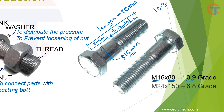Similarly, if the bolt diameter is 24 mm, total length is 150 mm, and grade is 6.8, we represent it as M24 × 150 - 6.8.